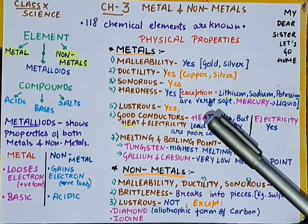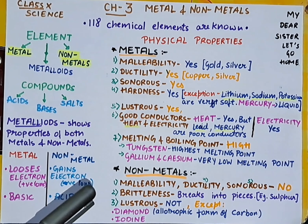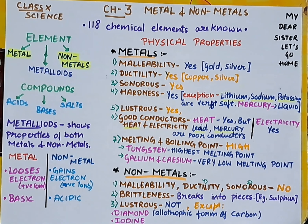For conductors of heat: metals are good conductors, but lead and mercury are exceptions — they are poor conductors of heat, though they are good conductors of electricity. Regarding melting and boiling point: metals have very high melting and boiling points. Tungsten has the highest melting point among metals, while gallium and caesium have very low melting points among metals.